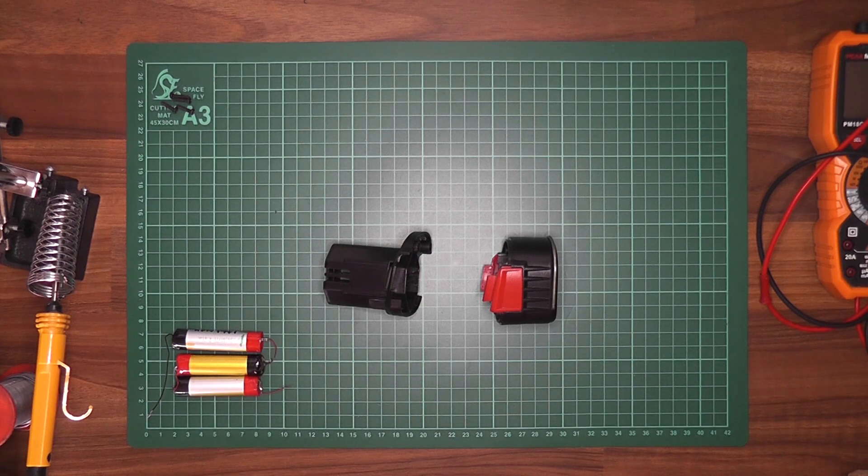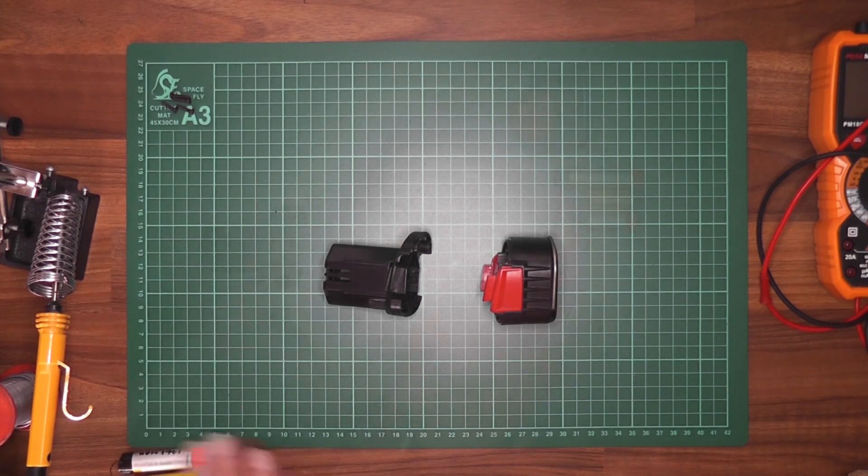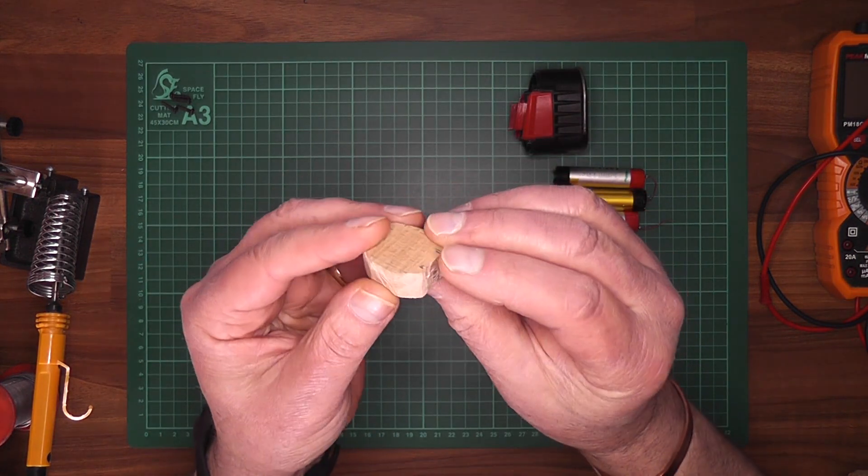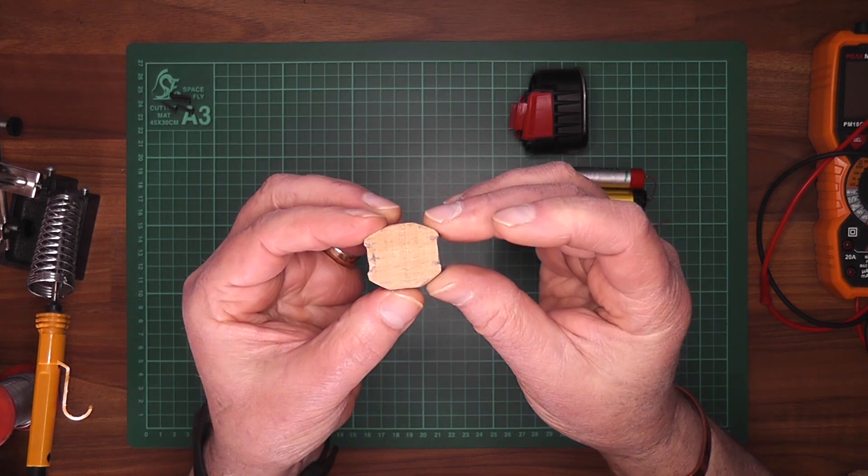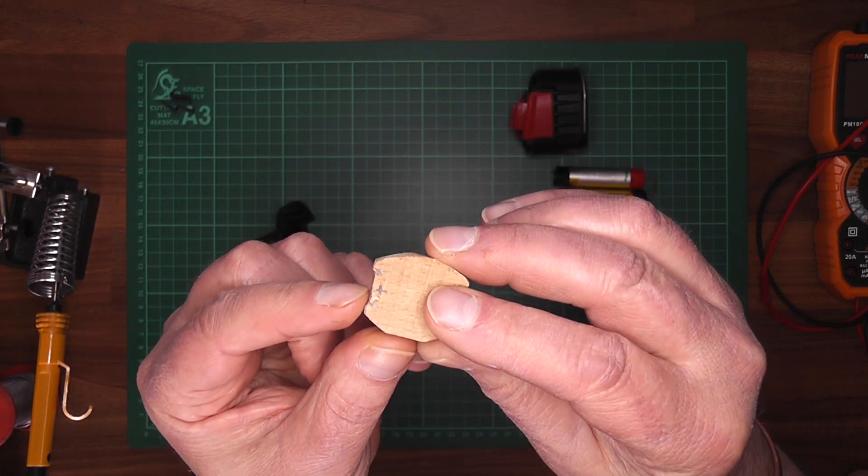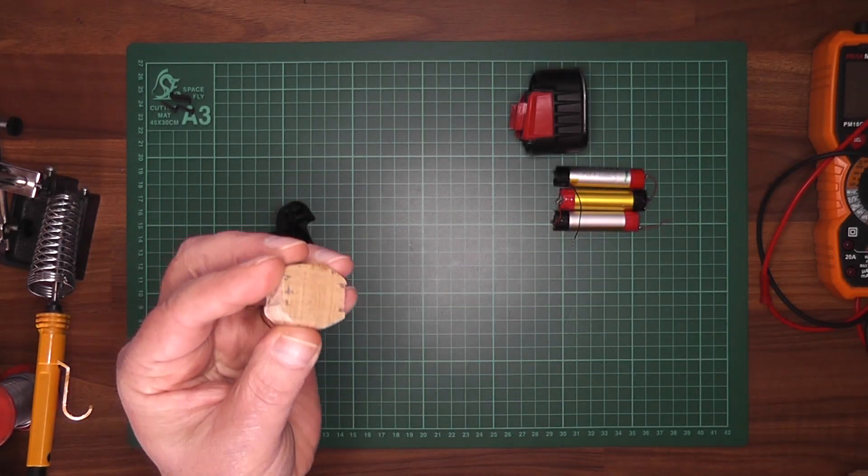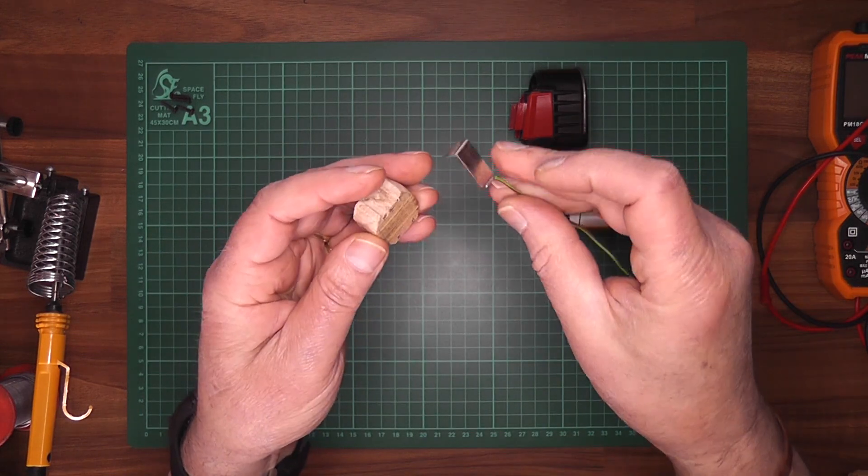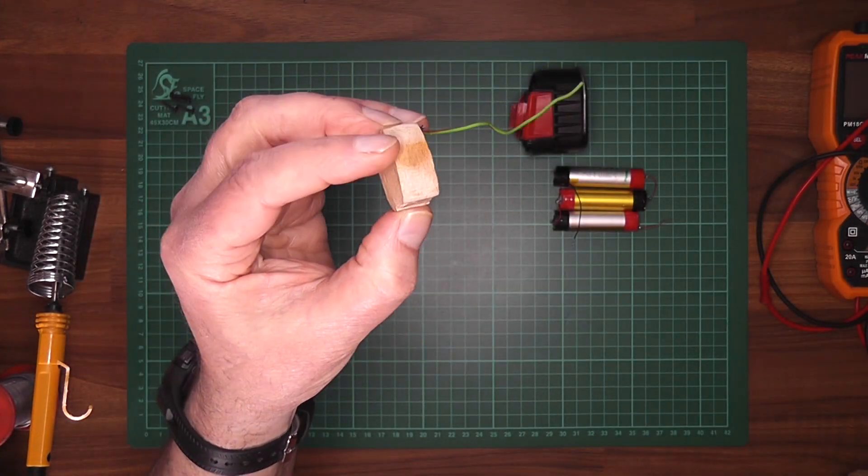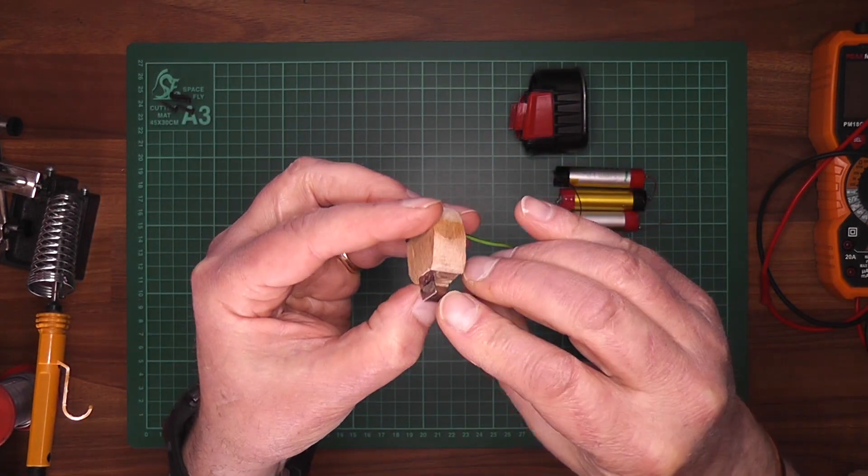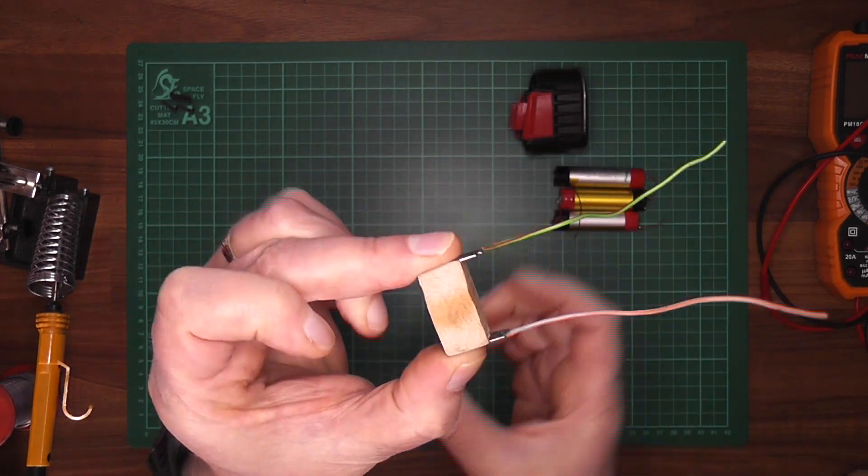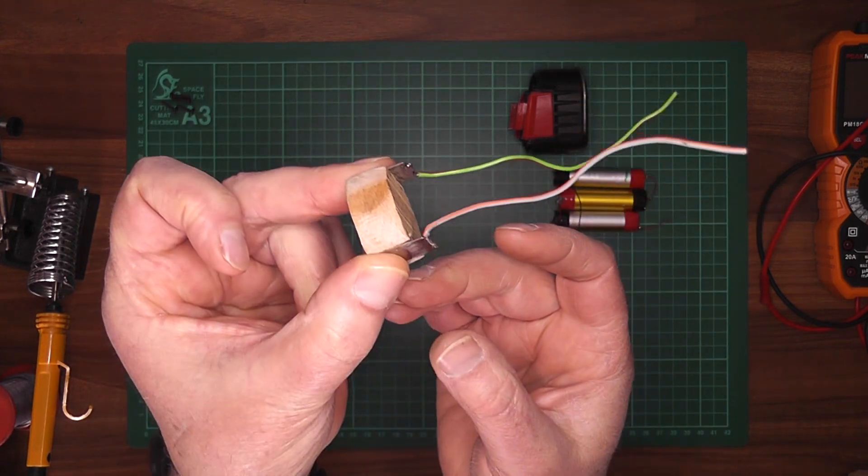So after much head scratching, I came up with a little timber block here, and that will be used as a spacer and insulator. Now you may notice I have a little notch taken out here, and that's for these here to fit in. So your little tabs, your contacts will go in there, and when they're in place, they'll be nice and countersunk.